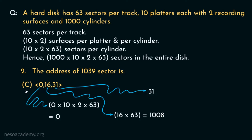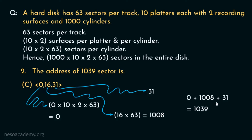For option C (0,16,31): cylinder 0 gives 0 sectors. To reach surface 16, we again cross 16 surfaces times 63 sectors each, giving 1,008 sectors. After reaching surface 16, to get to sector 31 we cross sectors 0 to 30 — that is 31 sectors. Total: 0 plus 1,008 plus 31 equals 1,039. Yes, this is our answer — this address corresponds to sector number 1,039.